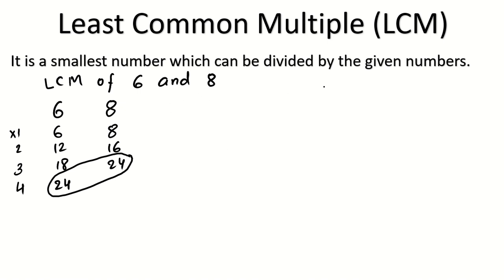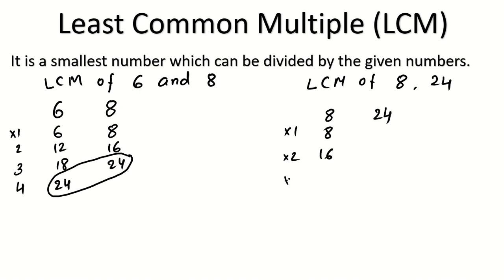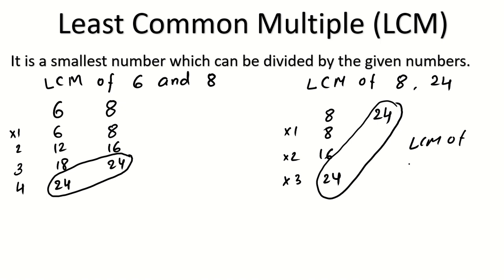Try another example: find LCM of 8 and 24. Since 24 is much bigger than 8, complete the multiplication table of 8 until you reach 24. 8×1=8, 8×2=16, 8×3=24. We got the same number 24. So LCM of 8 and 24 is 24. This multiplication table method is for younger kids dealing with simple one-digit numbers where they can easily write tables.